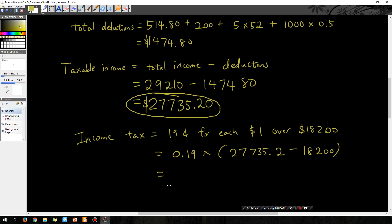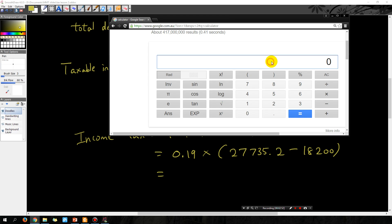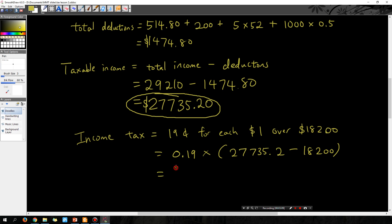So then let's put all that in the calculator. 0.19 times bracket, $27,735.20 minus $18,200, close bracket. And the answer is $1,811.69.